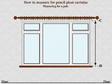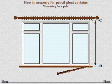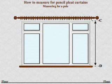To a window sill: measure to the sill then deduct 1 centimetre so that the curtain will sit that amount off the sill.